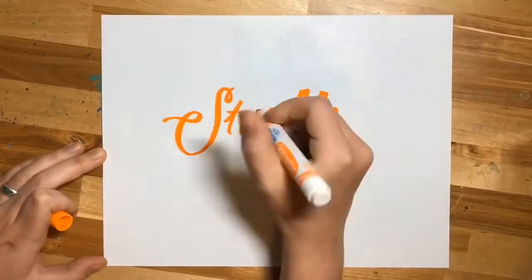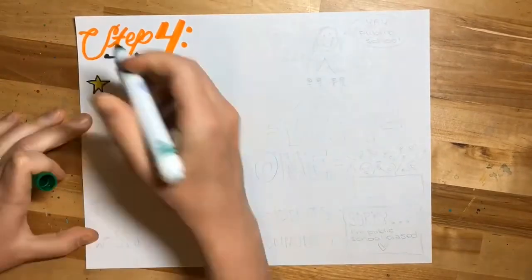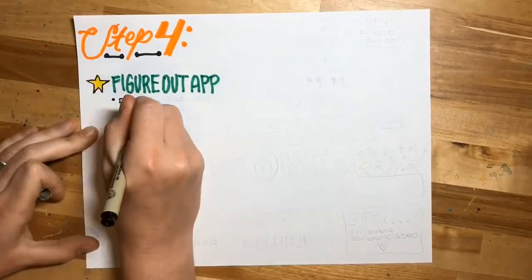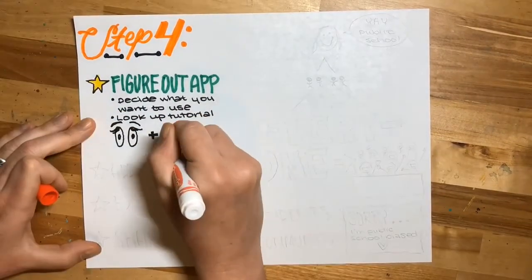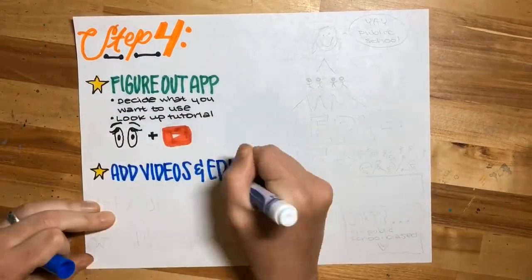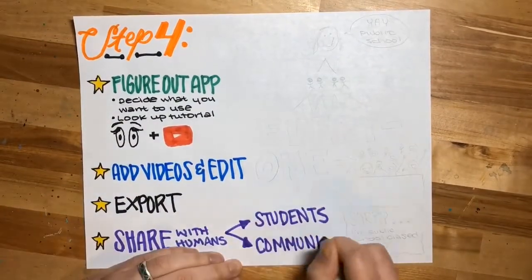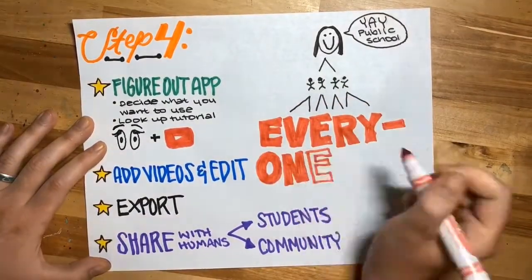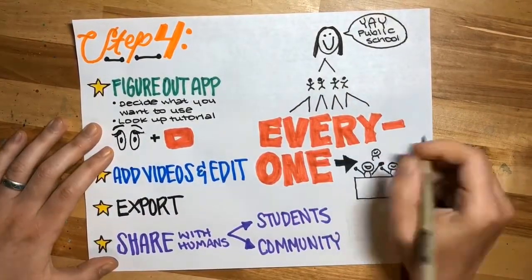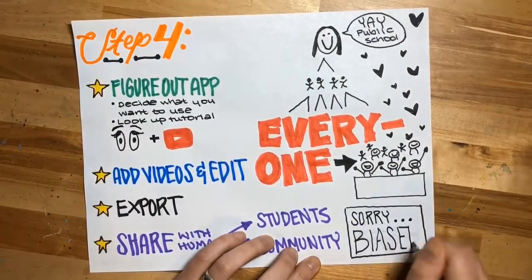Step four: editing. The first thing you want to do is figure out what app you're going to use if you haven't already. I highly recommend looking up a YouTube tutorial because there are a gazillion for any editing app you could ever want. After you're done with that, you can add videos, edit, and export in the app. But most importantly, share it with the humans. I really like to share what my district and school does because public school kind of gets a bad rap. Sorry to private school teachers, I'm kind of biased, but you could do the same for your school.